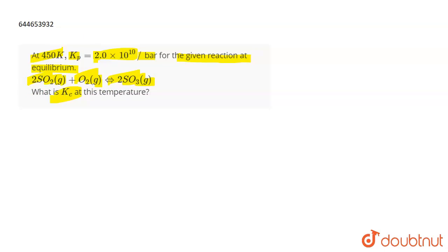For this question, you need to know the relationship between Kp and Kc. Kp is the equilibrium constant in terms of partial pressures, which equals Kc(RT)^ΔNg. Kc is the equilibrium constant in terms of concentration.